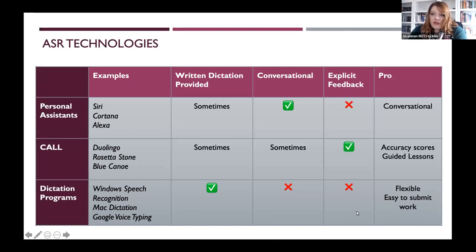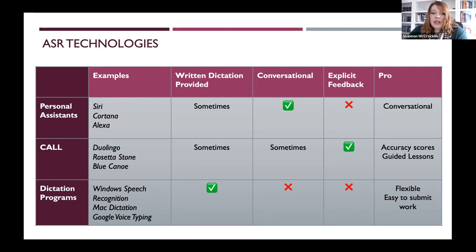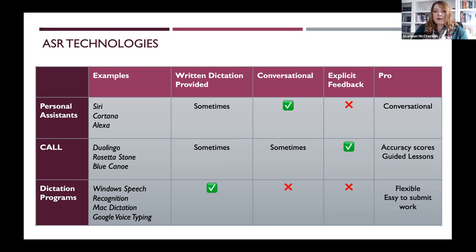This table shows an overview of the key technologies useful for learning that use ASR. The first is personal assistants — programs like Siri for the iPhone, Cortana for Android, or Alexa, which is available through Amazon. Whether you get written dictation with these programs depends on which one you use. With Siri, for example, you can track what Siri recognized and what Siri provides as a response, which are fairly conversational. The student can initiate an interaction and get some form of response. This is great for practicing question forms or imperatives.